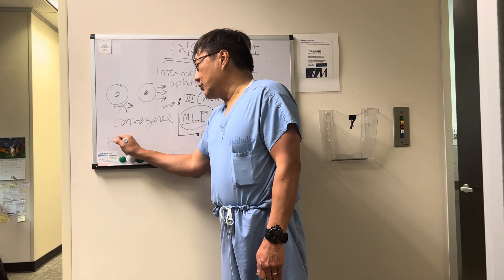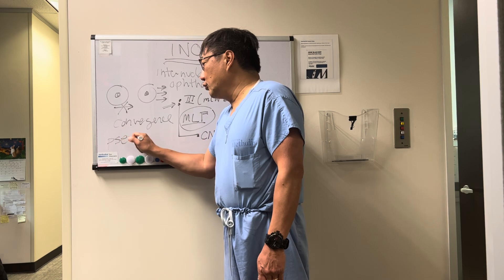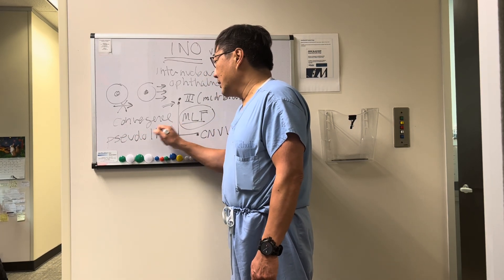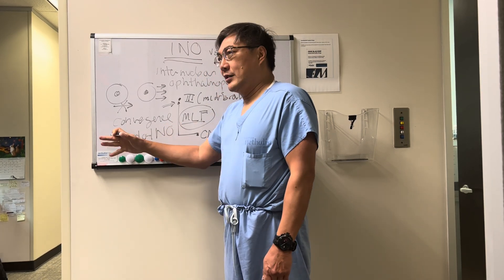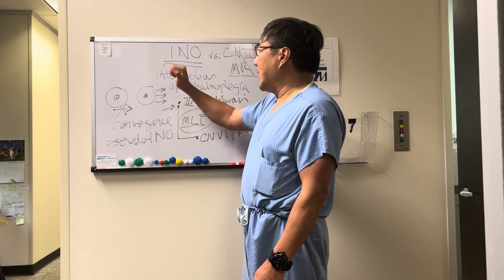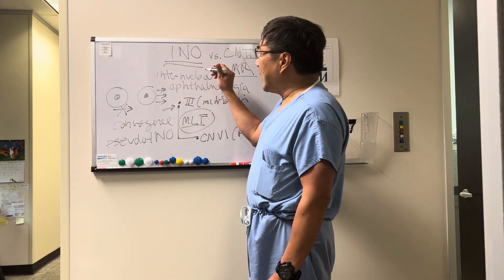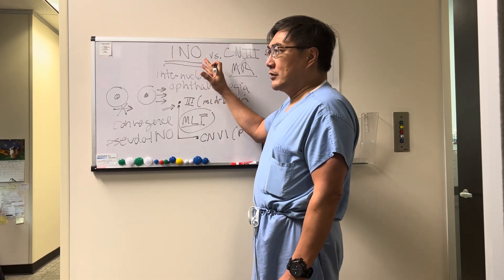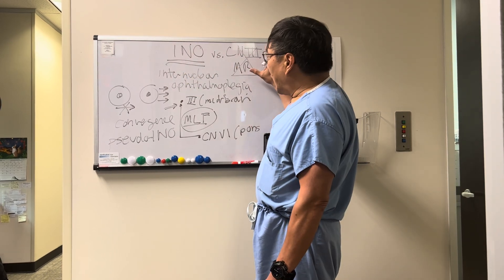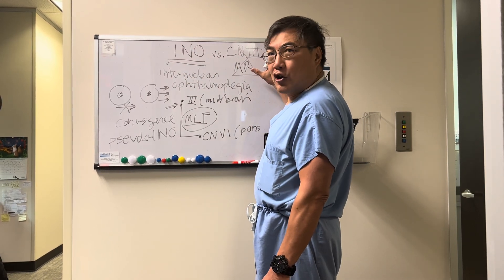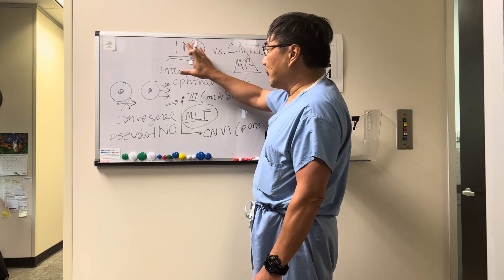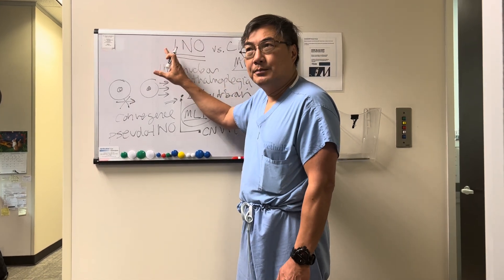You do need to rule out a pseudo-INO — such as myasthenia gravis or a restrictive problem — that could mimic an INO. But in general, differentiating the two should not be very difficult. Neurologists sometimes overcall isolated medial rectus palsy when in reality it's an INO.